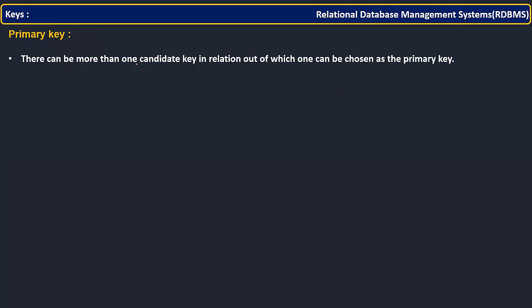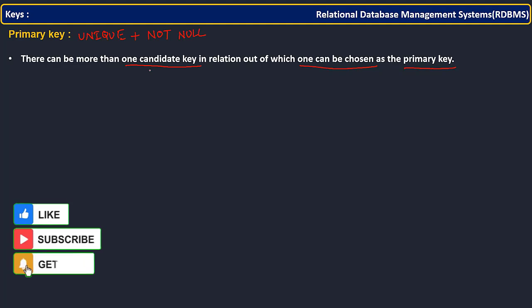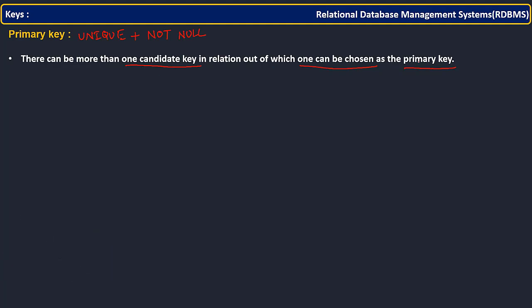You can have one or more than one candidate key. Out of all these possible candidate keys, we are just selecting one as a primary key. That means every primary key is unique plus not null. You can have more than one candidate key, but you are going to have only one primary key — exactly one, not more than that.